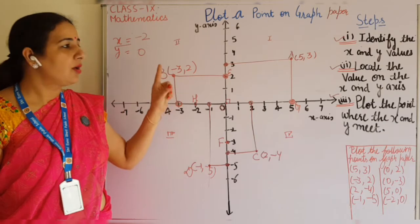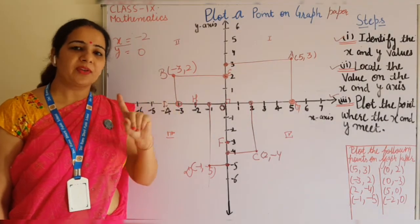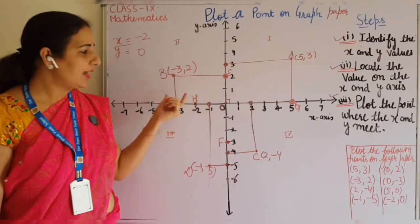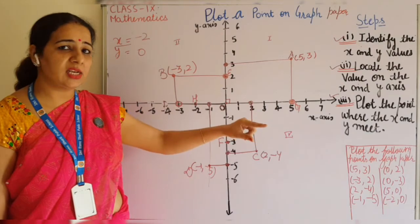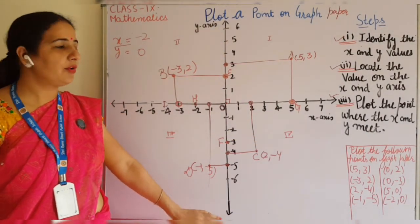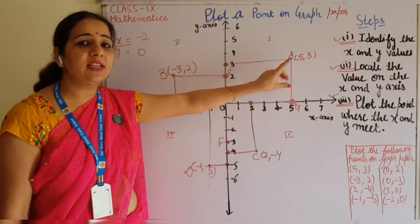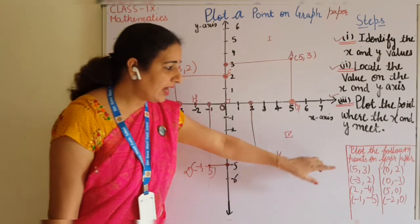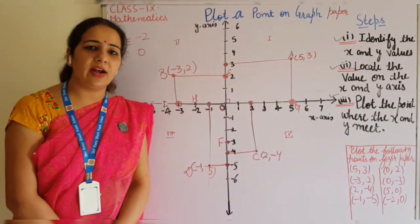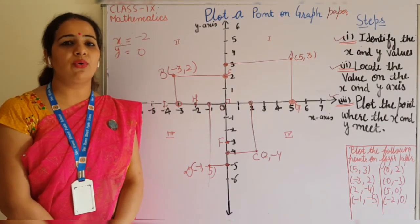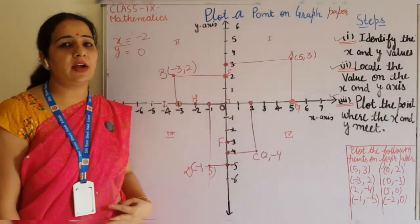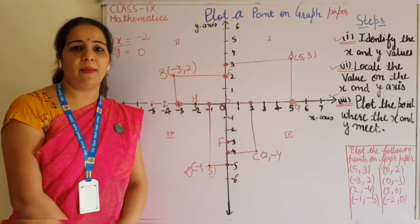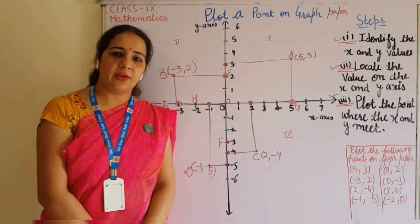So to summarize, you just need to follow the 3 steps: Step 1 — identify x and y separately; the first value is x and the second is y. Step 2 — locate the values on the axes: plot x on the x-axis and y on the y-axis. Step 3 — extend these lines and where they intersect is your required coordinate on the Cartesian plane. If any value is 0, the point lies on the axis, not in any quadrant. These questions are very important from the exam point of view. Practice on graph paper and that's all for today — thank you students.